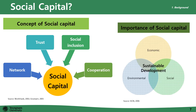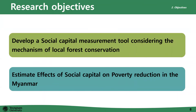We can understand that social factors are important in order to achieve success of the REDD+ program. However, we cannot deny that social factors have been considered as a secondary issue in traditional forest programs. The research objective of this study is to develop a social capital measurement tool considering the mechanism of local forest conservation, and then estimate the effects of social capital on poverty reduction in Myanmar.